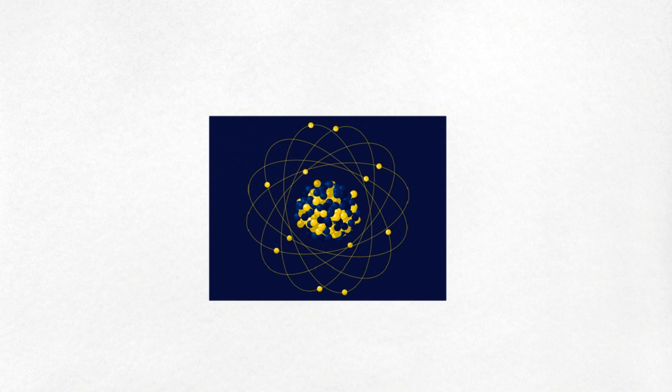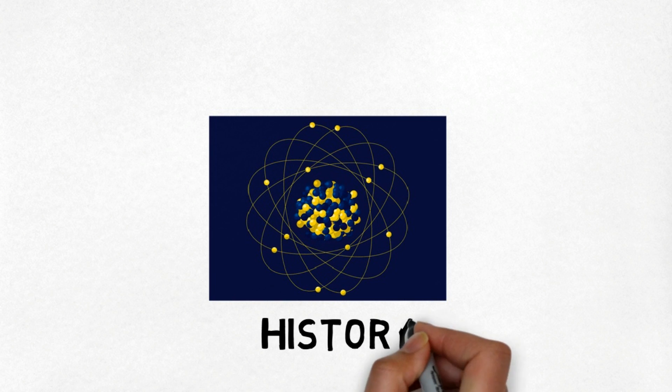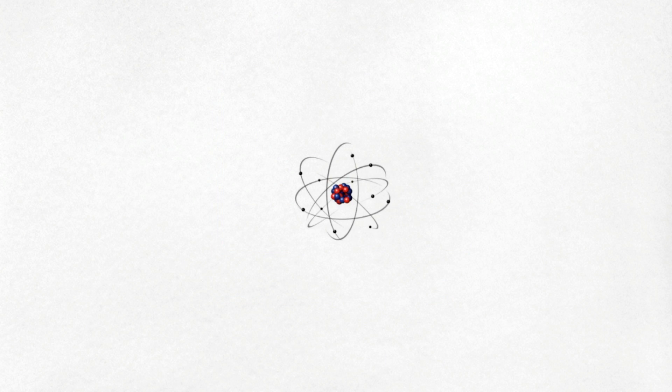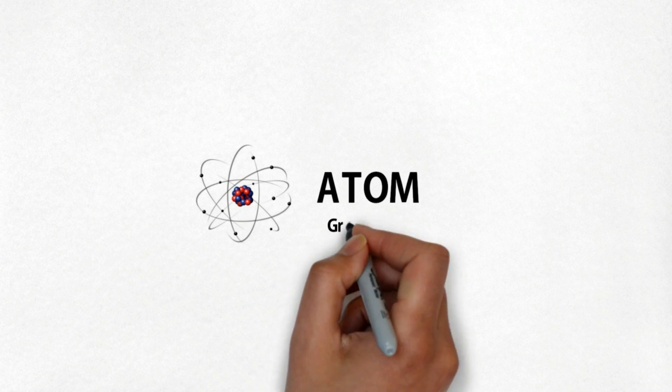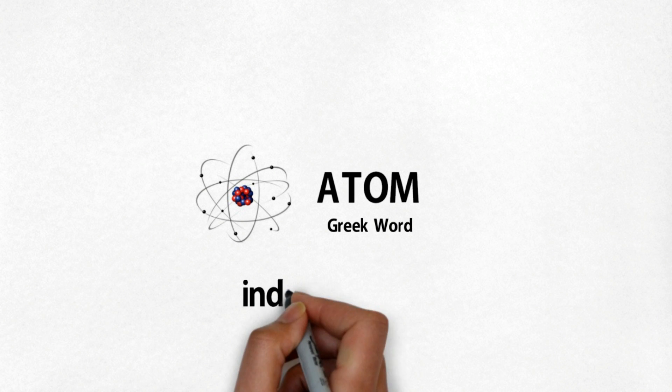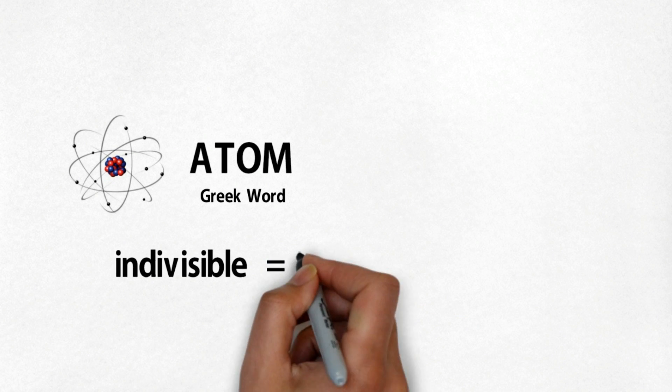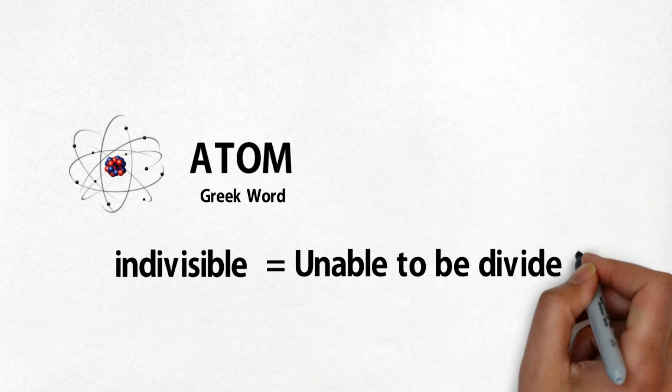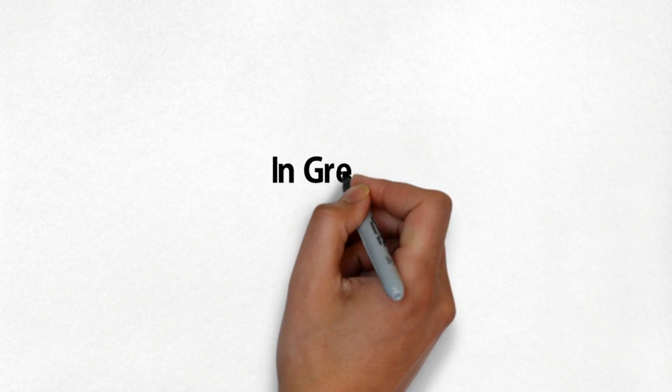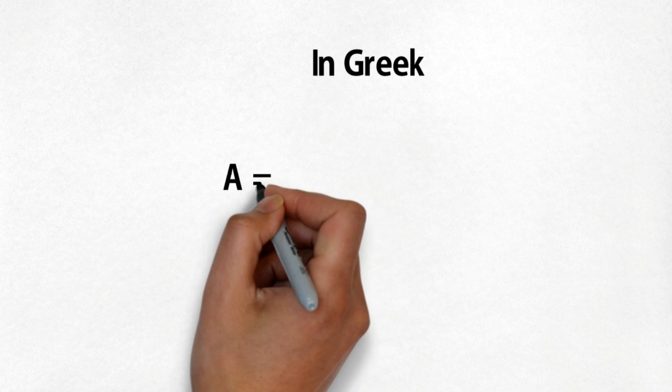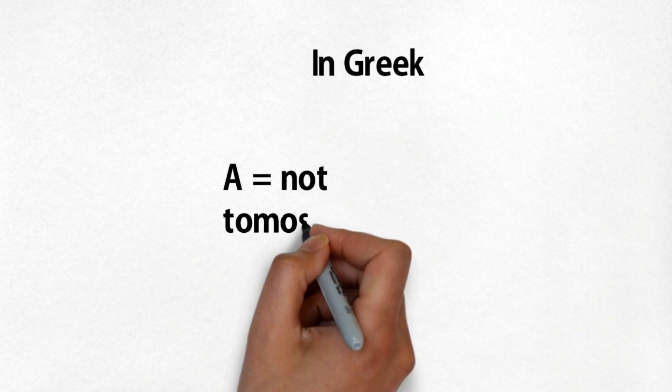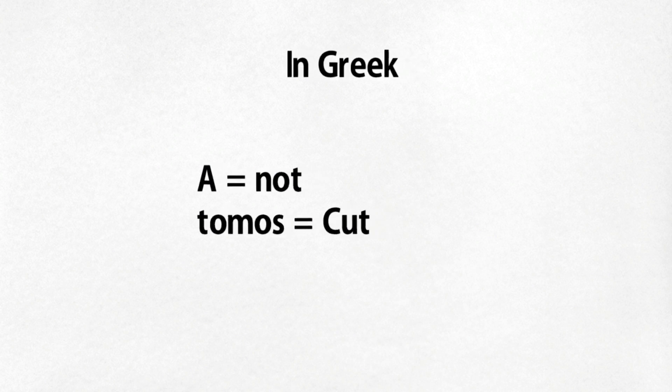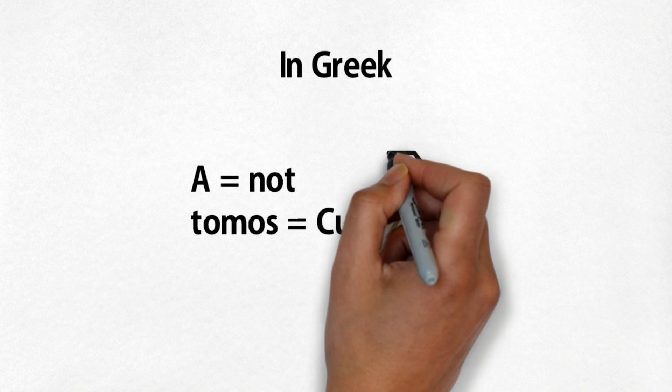Let's first know about the history of atom. The term atom comes from the Greek word for indivisible, meaning unable to be divided. In Greek, the prefix 'a' means not, and the word 'tomos' means cut.